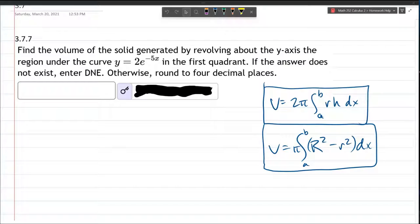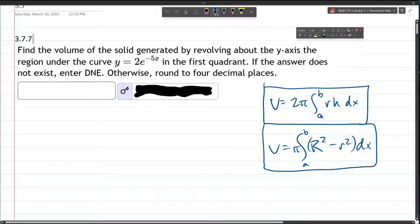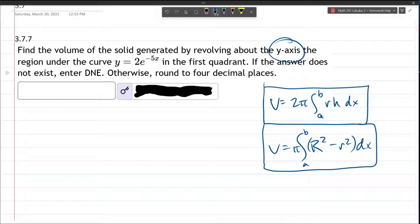We're going to find the volume of a solid of revolution. We're revolving about the y-axis, that's important to remember. We have a curve, y equals 2e to the negative 5x.